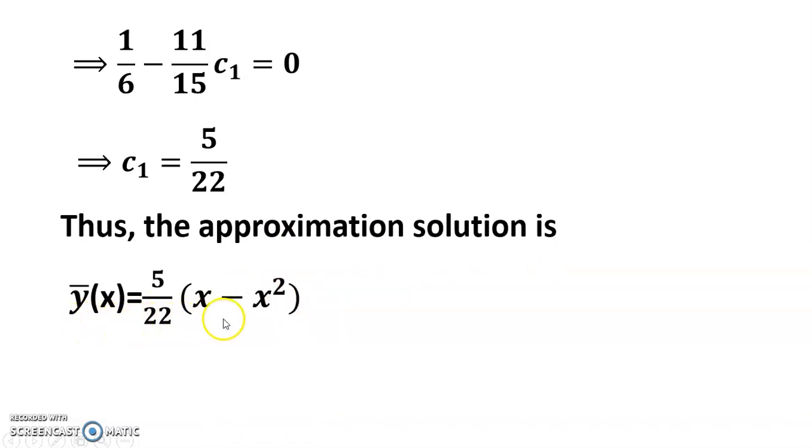y bar x equals five by twenty-two into (x minus x square). I hope it is clear. Thanks for watching. Please write everything as this is an important theorem.